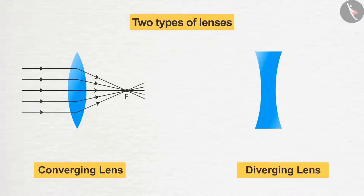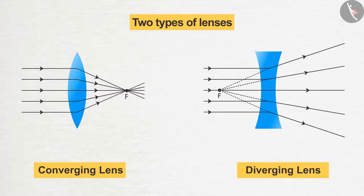Like mirrors, the lenses which converge the light are called converging lenses, and the lenses which diverge the light are called diverging lenses.